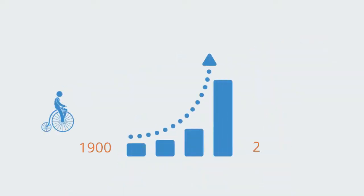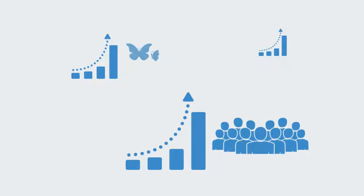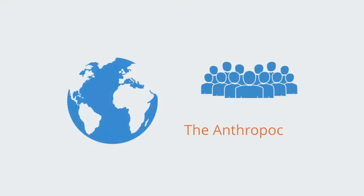Many of the processes of change that began with the industrial revolution reached a takeoff point in the mid to late 20th century, as almost all indicators for economy and ecosystems started changing at an exponential rate — from population growth to loss of species to energy consumption. This great acceleration of economic activity has given birth to a new geological era that scientists call the Anthropocene, as human industrial activity has become the primary driver of changes within Earth's systems.